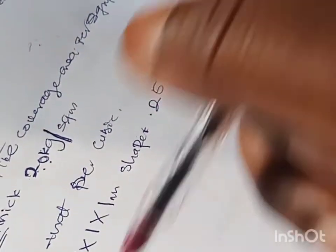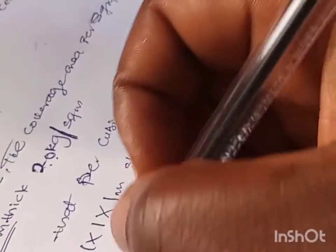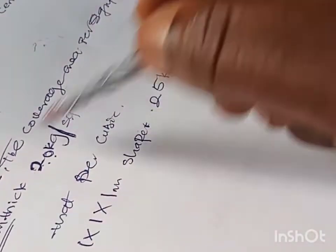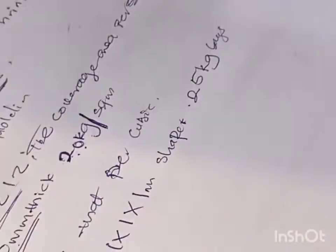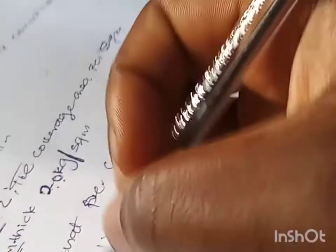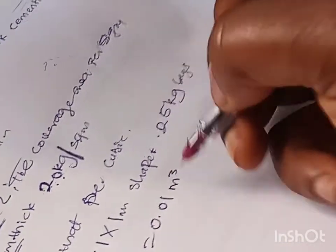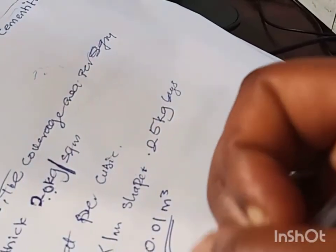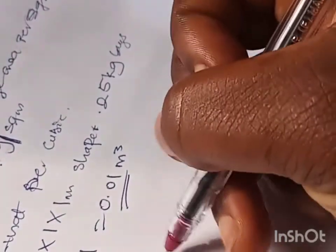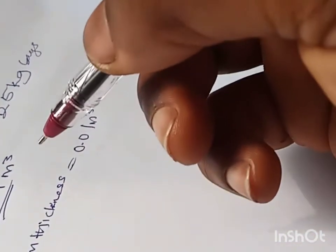For you to know your total consumption per cubic meter, you are going to first of all convert this square meter to cubic meter using our 10mm thickness. That's going to give us 0.01 cubic meter. So now we know that one square meter using 10mm thickness is equal to 0.01 cubic meter.